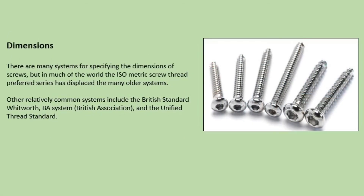Dimensions. There are many systems for specifying the dimensions of screws, but in much of the world the isometric screw thread preferred series has displaced the many older systems. Other relatively common systems include the British Standard Whitworth, BA system and the Unified Thread Standard.